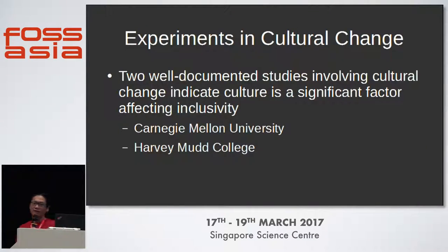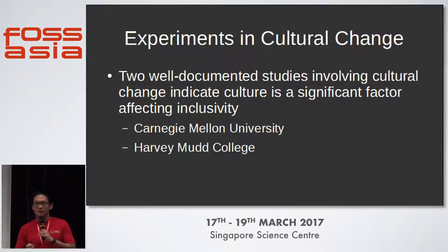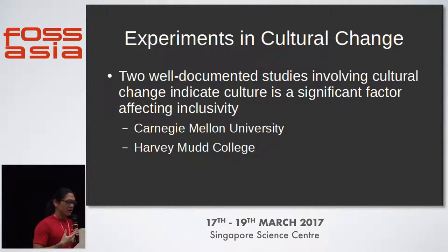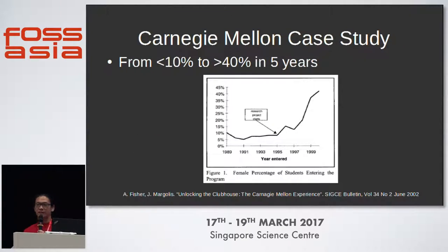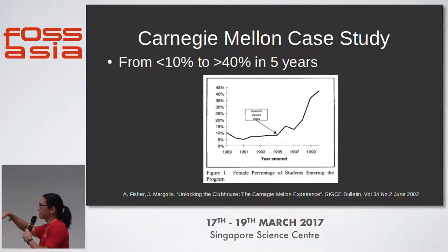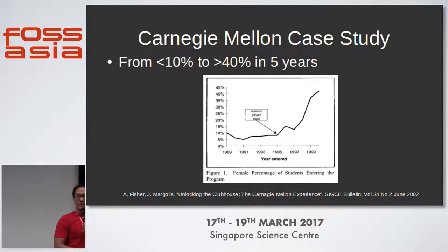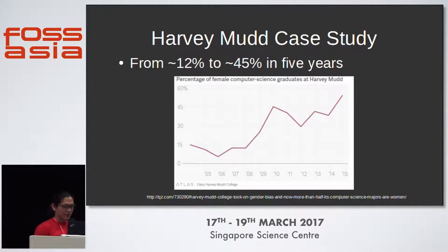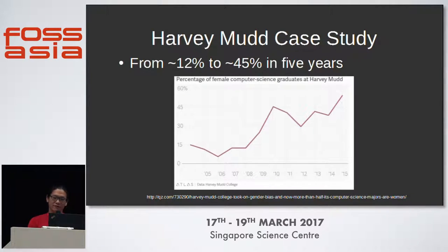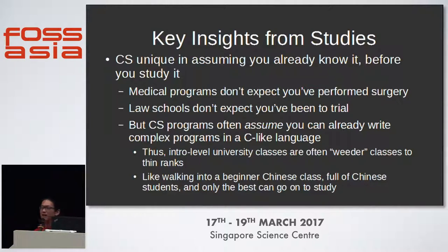I started looking around and found two interesting experiments in cultural change: well-documented studies from Carnegie Mellon University and Harvey Mudd College. When these universities engaged in these experiments, Carnegie Mellon went from below 10% female graduation rate to about 45% in about five years. Harvey Mudd had a similar result, going from below 15% to about 50% in about five years. The key insight from the studies is that computer science is unique in assuming that you already know it before you study it.